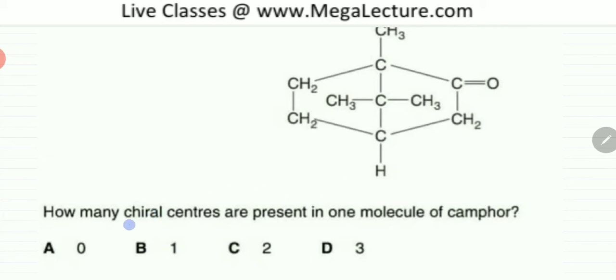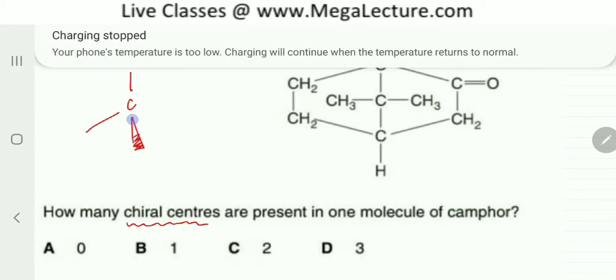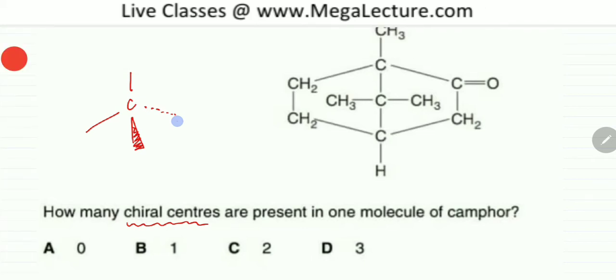Now the first thing is what's a chiral center? A chiral center is when a carbon is forming four bonds and single bonds with four different groups. That's what a chiral center is.